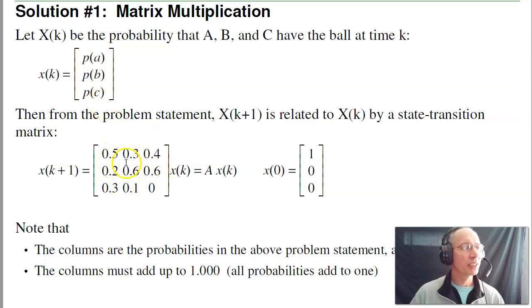Then to define the state transition matrix. X of k plus one is this matrix times X of k, and the initial condition. Note that the state transition matrix, all the columns have to add up to one. That's basically saying all probabilities have to add to one. The first column is what happens if A has the ball. That says A keeps the ball half the time, passes it to B 20%, passes it to C 30%.